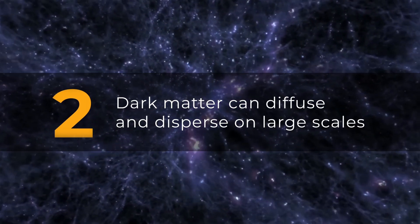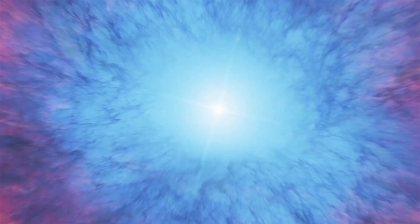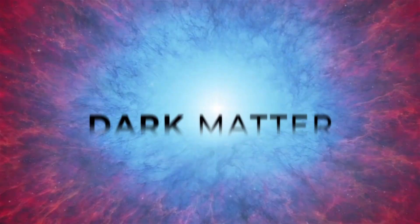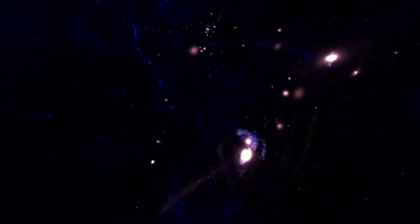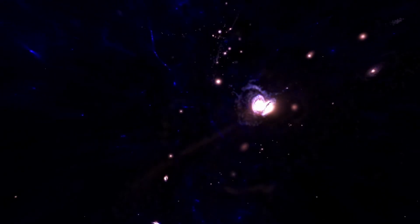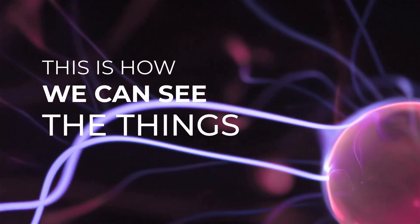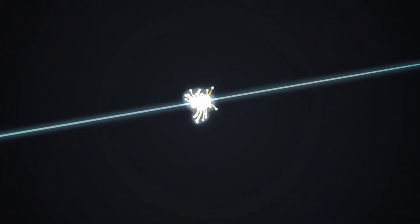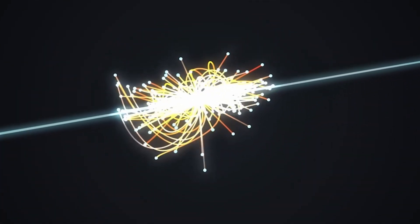Dark matter, however, typically lacks these strong interactions, and can therefore diffuse and disperse on large scales. The biggest difference between ordinary matter and dark matter is that ordinary matter interacts with photons, the particles that make up light. This is how we can see the things around us. Light bounces off objects before reaching our eyes.